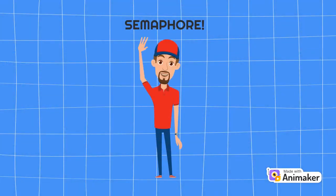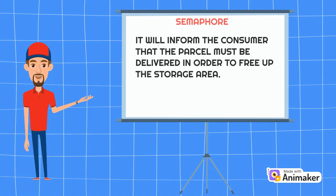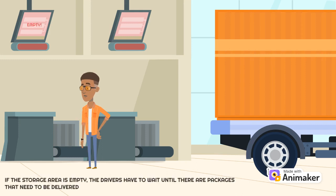To solve this problem, we will use Semaphore. Semaphore will tell the consumer that the parcel must be delivered in order to free up the storage. Delivery drivers continuously check the storage area for packages to pick up. If the storage area is empty, the drivers have to wait until there are packages that need to be delivered.